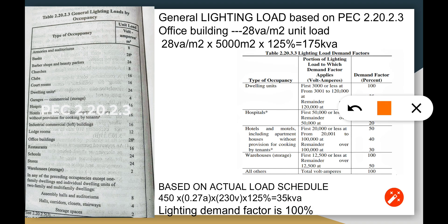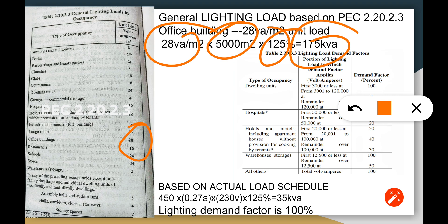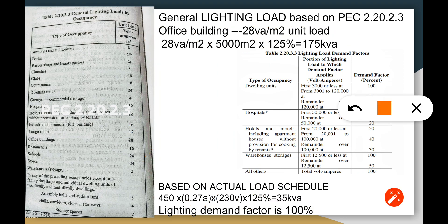According to general lighting loads, based on the office building we have 28 VA per square meter multiplied by the square area with a continuous load of 125 percent, and we shall get 175 kVA based on the PEC code. Based on the actual load schedule, we shall have 40 pieces of lighting load times 0.27, which is 230 for the ballast amperes, times 125 percent, and we get 35 kVA.